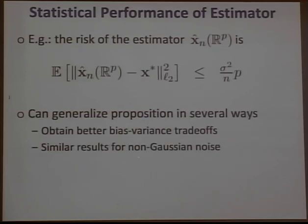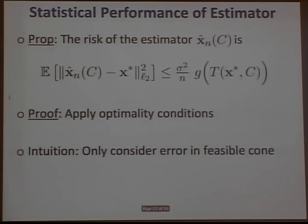This result is straightforward to prove and can be generalized to non-Gaussian noise with better bias-variance trade-offs. The high-level idea is that the Gaussian complexity of the cone of feasible directions controls the risk of the estimator.